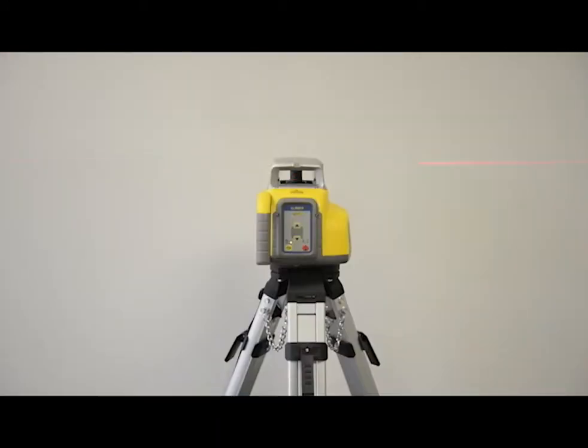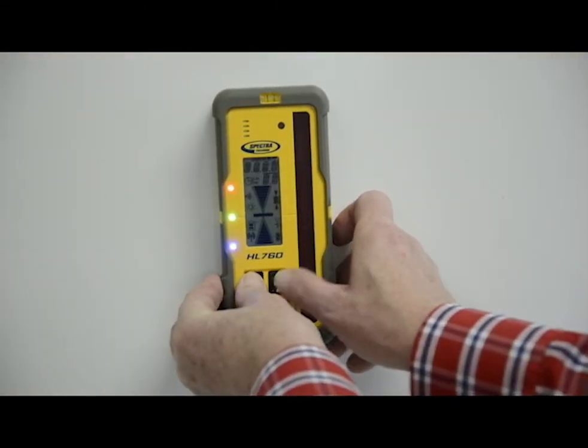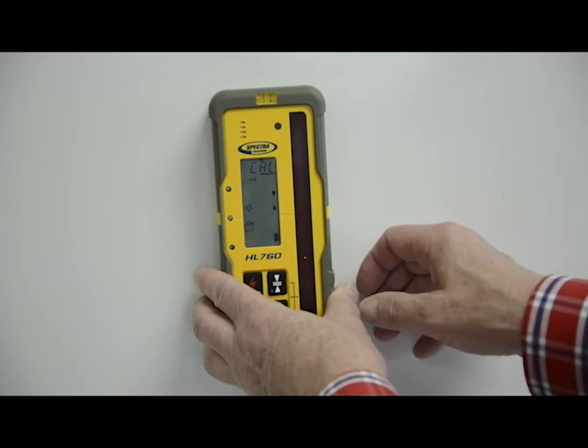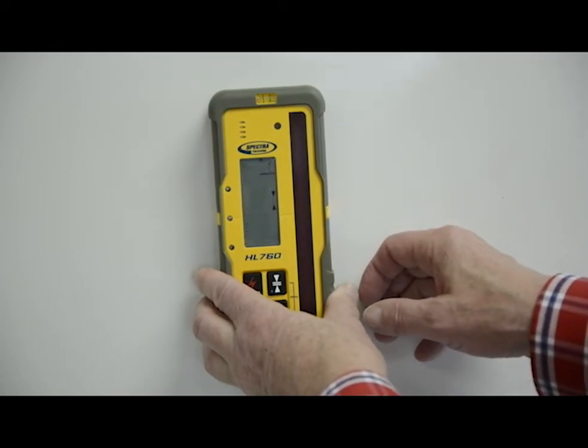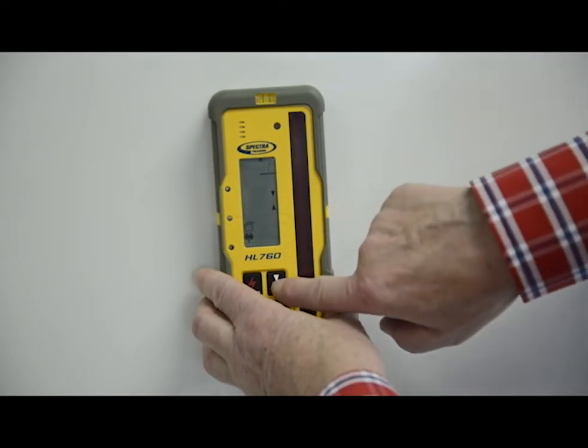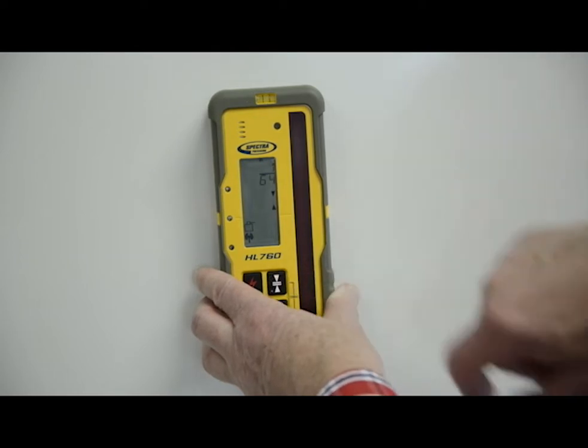The laser is now pointing in the direction of the plus Y axis. Using an HL receiver, press the dead band and power buttons simultaneously to turn it on in calibration mode, 1/64 inch, 0.01 millimeters.